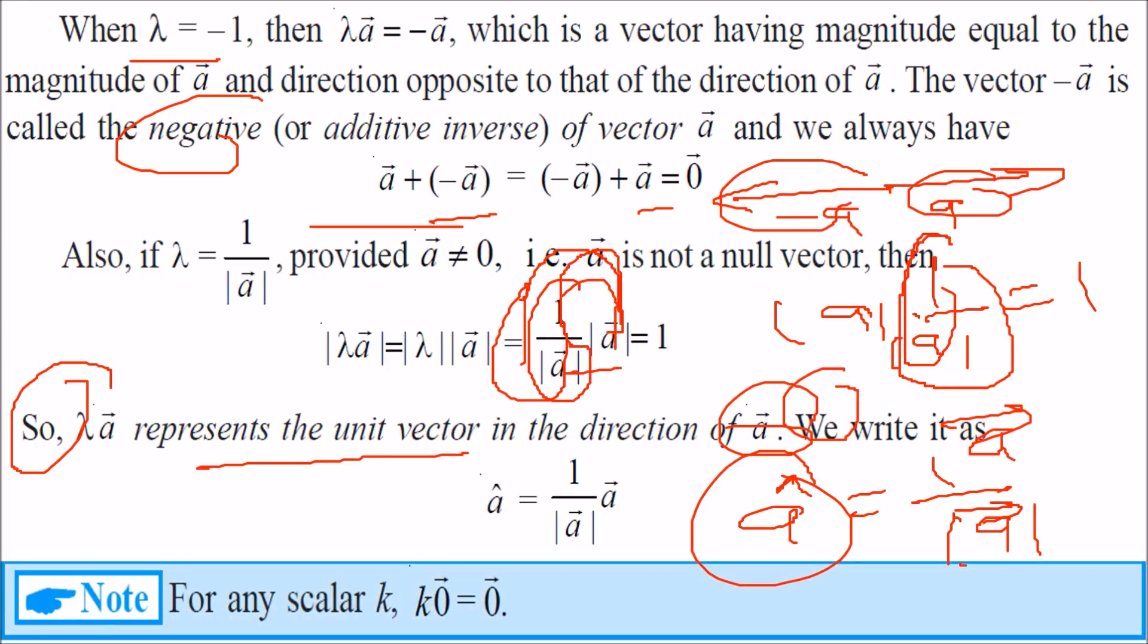If you have a scalar k which equals some value but the vector is 0, the result will be 0.